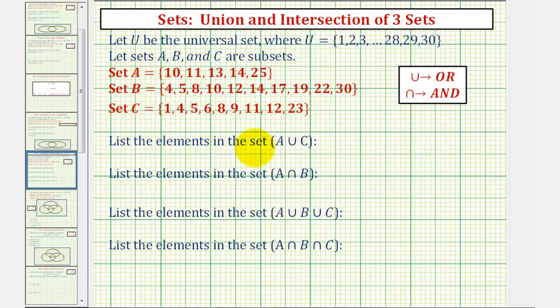So we first want to list the elements in the set A union C, where union means OR, so we can also think of this as a set of elements that would be in A or in C. Which means we'll be combining the elements in set A and C into one set. If an element occurs in both sets, we only list it once. So A union C will contain all the elements that are in A or in C. We'll list these in order from least to greatest.